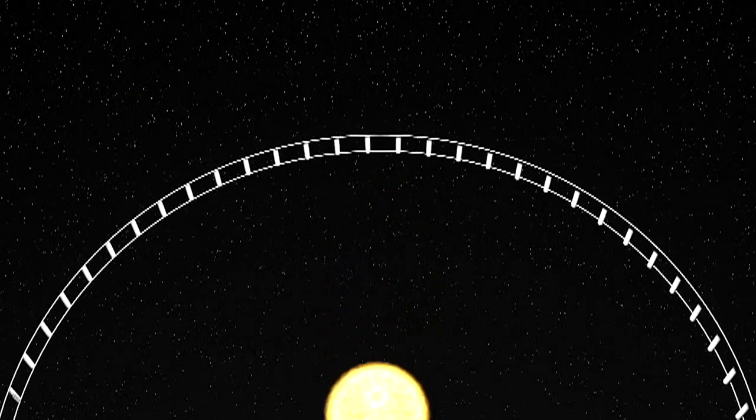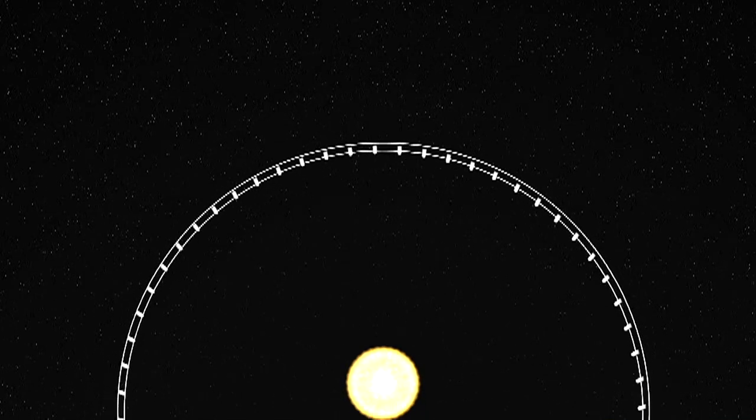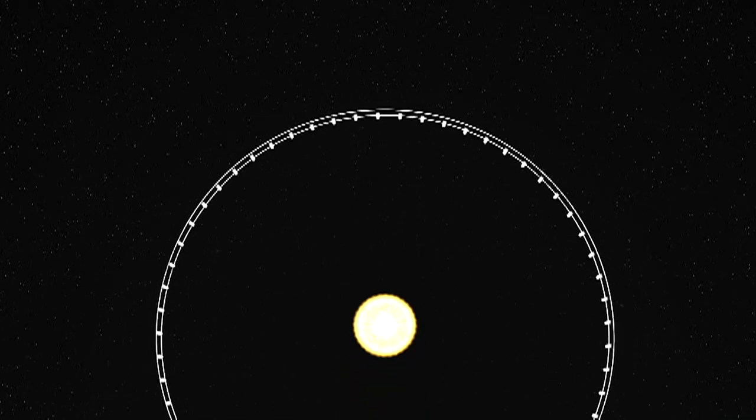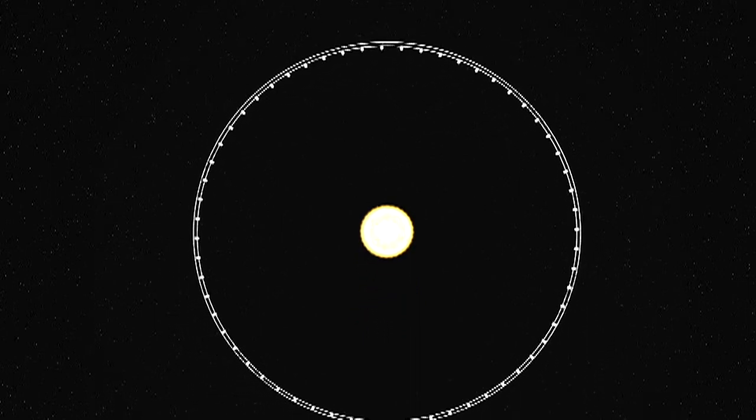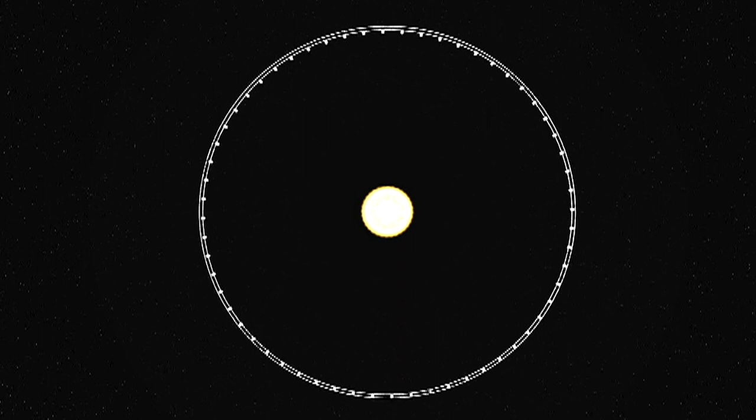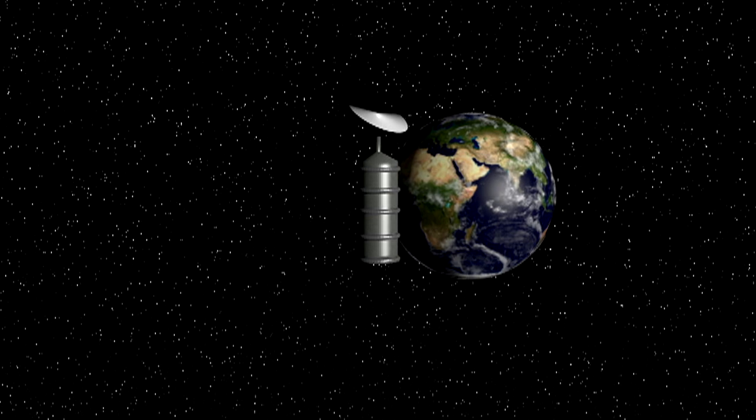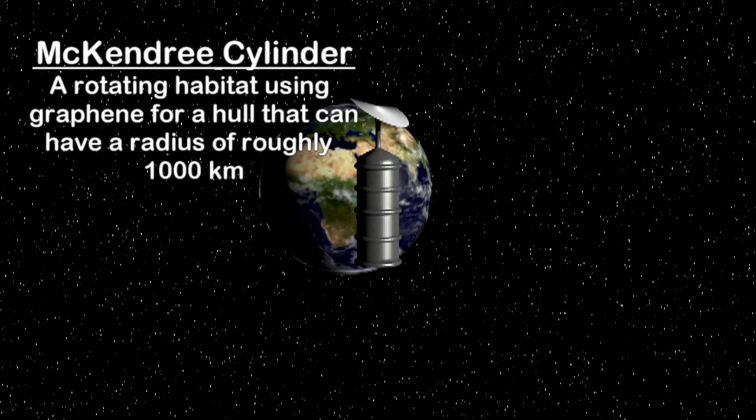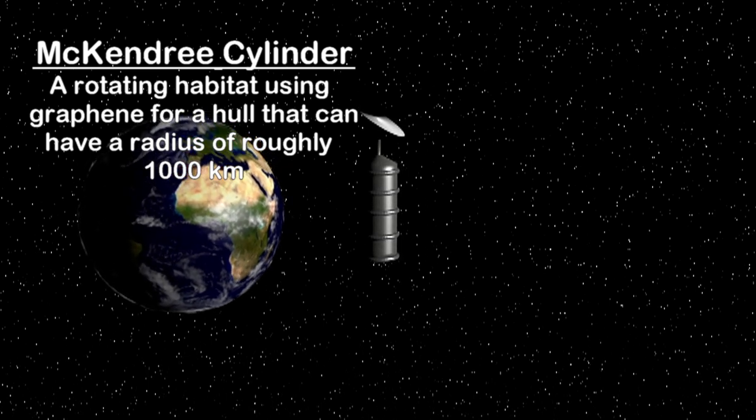Such a rung world might be a series of a million O'Neill Cylinders connected by a pair of cables, one used for clockwise movement between rungs and the other counterclockwise perhaps, or it might be even more upscaled, if you have bulk graphene manufacture and be two topopolis connected by thousands of McKendree cylinders acting as rungs. It depends on your level of technology.